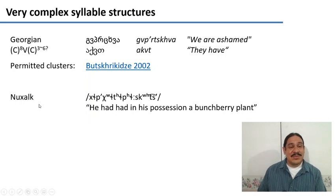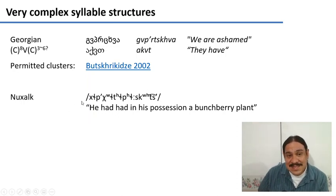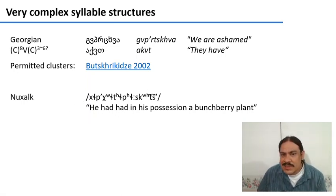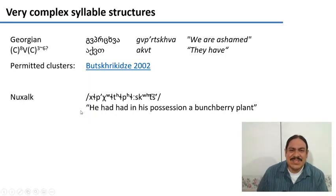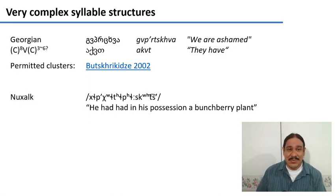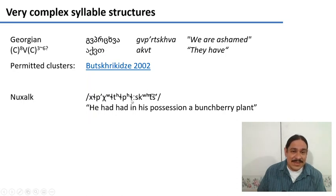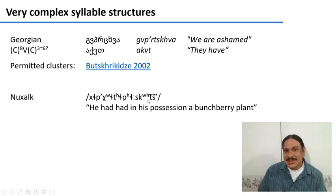And there's a language called Nuxalk from the west coast of Canada, which is reported to have this as a word — meaning something like 'he had had in his possession a bunchberry plant.' The fricatives here are probably syllabified, so they serve as vowels. But as you can see, this is a huge cluster of consonants.